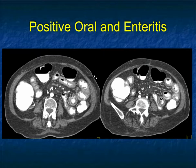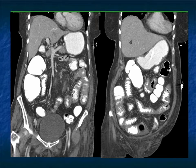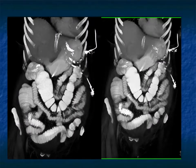One of the things I have done a bit of, but think we need to do more, is cinematic rendering in patients with positive oral contrast. I'll show you some examples and leave you with this to think about. This is a nice case — there are some dilated thickened small bowel loops. You can see fold thickening nicely on the coronal views and on the patient's volume rendered imaging.